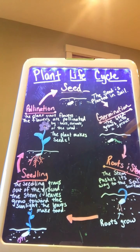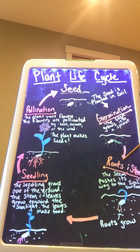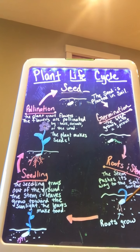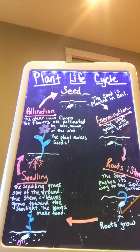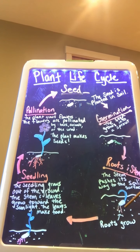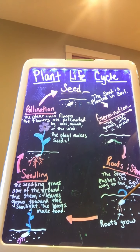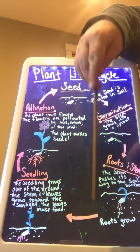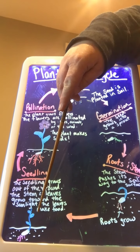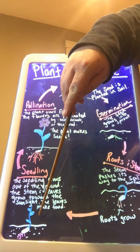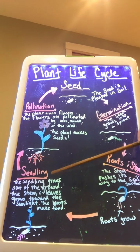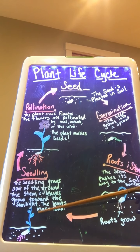Then, once it gets more water and sun, it will start growing roots and a stem. You can see the little roots growing down, and the roots are used to suck up the water to help the plant grow. The stem is going to come out of the top of the soil. Hopefully the plant gets more water — not too much, but just enough — and sunlight, and it will turn into a seedling. A seedling is similar to a baby plant.